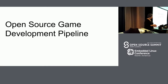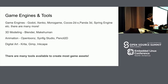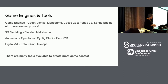I'm going to talk a little bit about the open source game development pipeline in 2019. There are many engines available now, like Godot or Xenko, which was recently open sourced, or Monogame, which is basically the XNA framework, which has been around for a while.